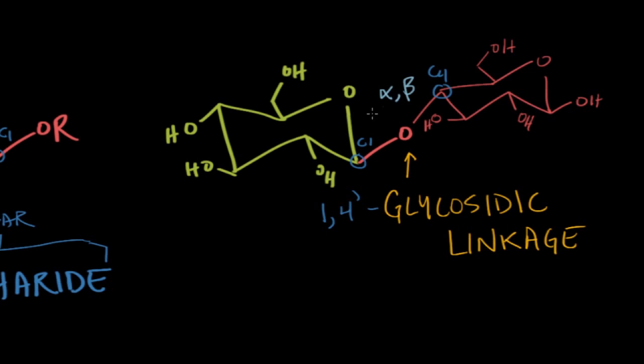If the group is cis with respect to the sixth carbon, it's beta. If it's trans, it would be an alpha linkage. In this case, our OR group, which is this whole carbohydrate, is cis with respect to the C6 carbon, so we have a beta 1,4 glycosidic linkage.